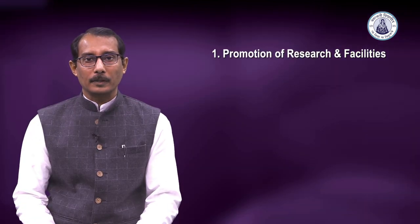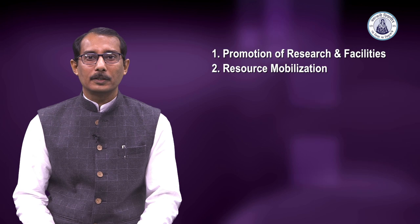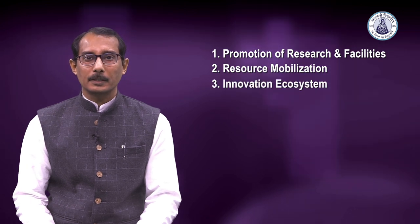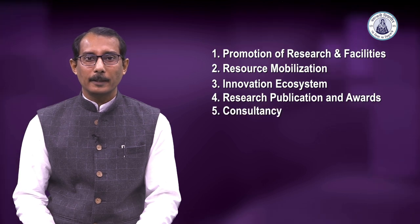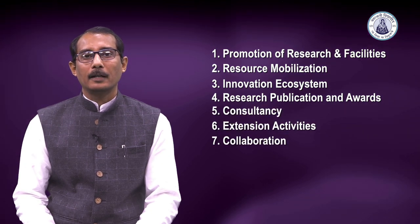Within Criteria 3 itself, there are 7 key indicators: promotion of research and facilities, resource mobilization for research, innovation ecosystem, research publication and awards, consultancy, extension activities, and collaboration. Research publications and awards have been given the highest weightage of 100, followed by extension activities at 40, and innovation ecosystem at 30. All other indicators have a weightage of 20.